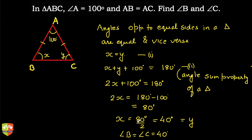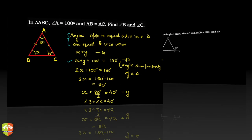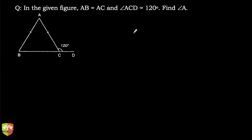I hope you understood. Here we used two concepts: the concept that sides opposite to equal angles are equal, and the angle sum property. Here is one more problem. In the given figure, AB is equal to AC — again the sides are equal — and angle ACD is 120 degrees. So you can check this is 120 degrees here.